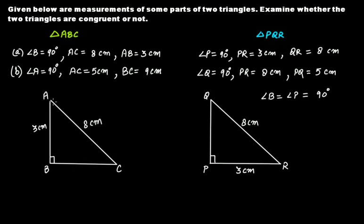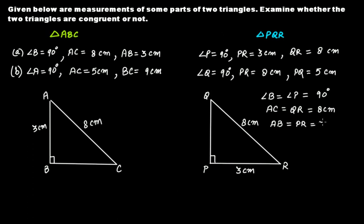Clearly, AC is the hypotenuse in triangle ABC and QR is the hypotenuse in triangle PQR. So AC equals QR equals 8 cm — both hypotenuses are equal. Also, AB and PR are both 3 cm, so AB equals PR equals 3 cm.